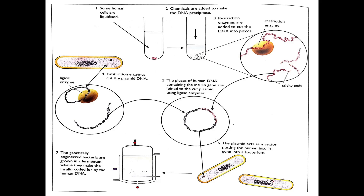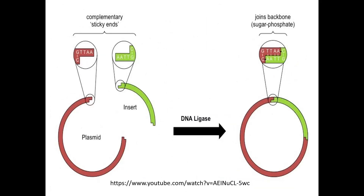In the process: human cells are liquidized, chemicals are added to make DNA precipitate, restriction enzymes are added to cut the DNA into pieces with sticky ends. The pieces of human DNA containing the insulin gene are joined to a cut plasmid using ligase enzymes. The plasmid and insert have complementary sticky ends. The DNA sequence links back to biological molecules — the sugar-phosphate backbone — and involves enzyme active sites.